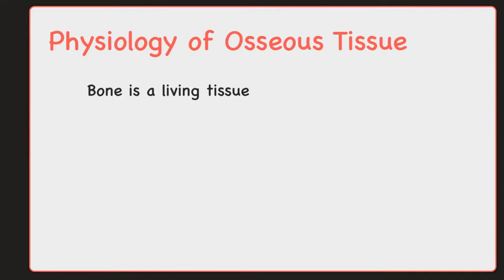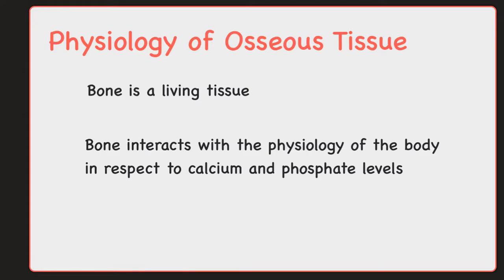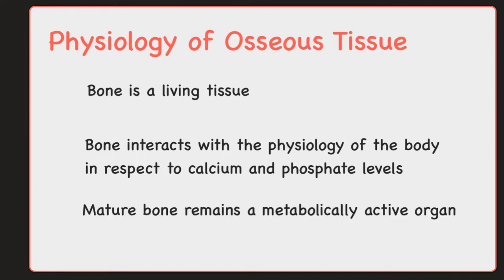Bone is a living tissue, and bone can also contribute to the physiology of the body. Remember, bone is a hardened matrix, and it is made out of both calcium and phosphates. We can put those calcium and phosphates into bone to make bone and harden bone, but we also have the ability to take those out if the body is in need of them. So mature bone is going to remain a metabolically active organ. It is involved in its own maintenance of growth and remodeling. I talked about bone growth and bone formation in my last video, and certain parts of this continue throughout your entire life.